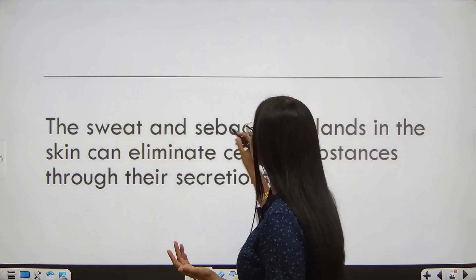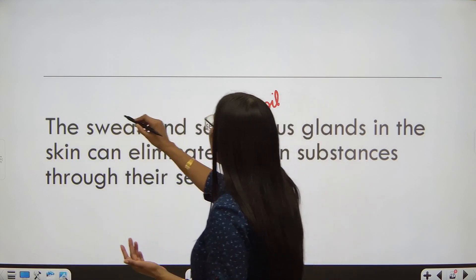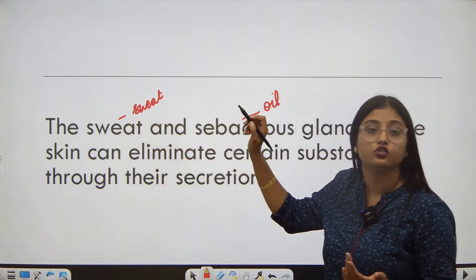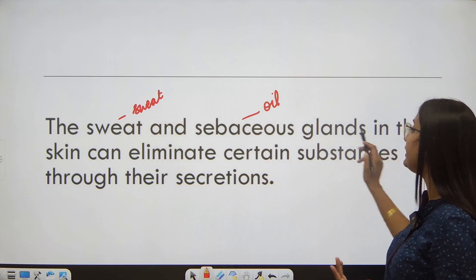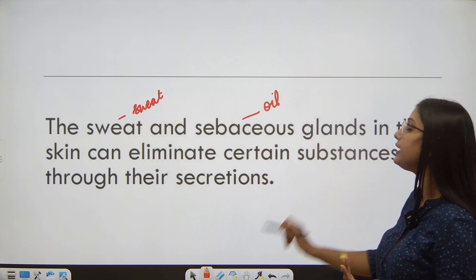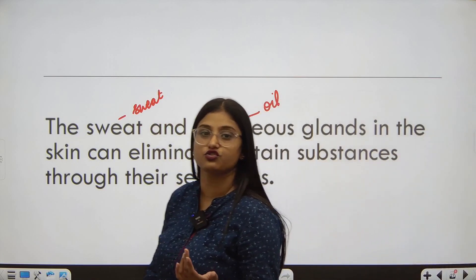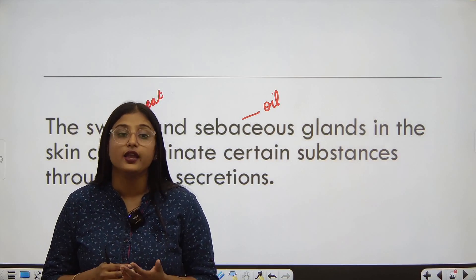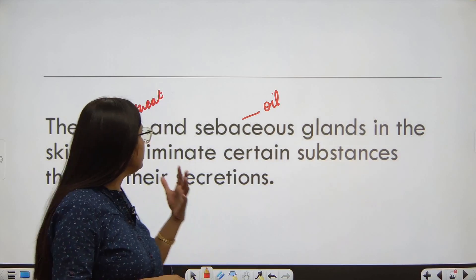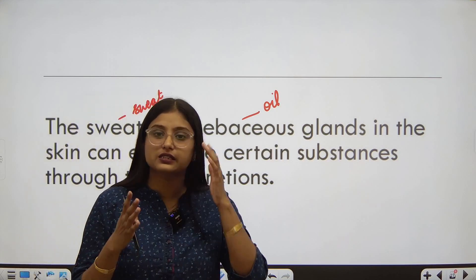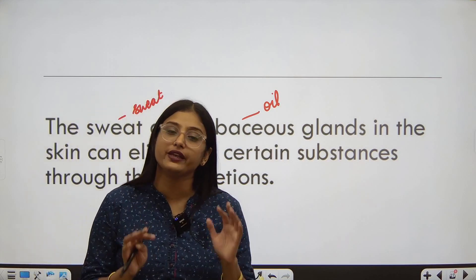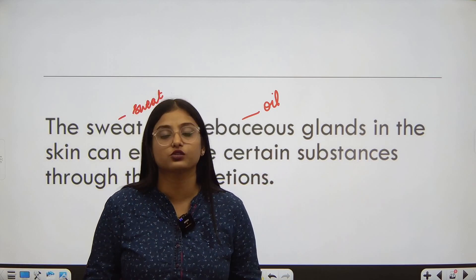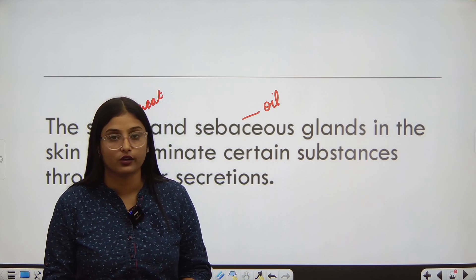The glands that secrete oil are the sebaceous glands, and the glands that secrete sweat are the sweat glands. We have sweat and sebaceous glands in the skin that eliminate substances through their secretions. In sweat there is also waste, and even in our oil we have sebum waste coming out. That is why skin is also considered as an excretory organ.